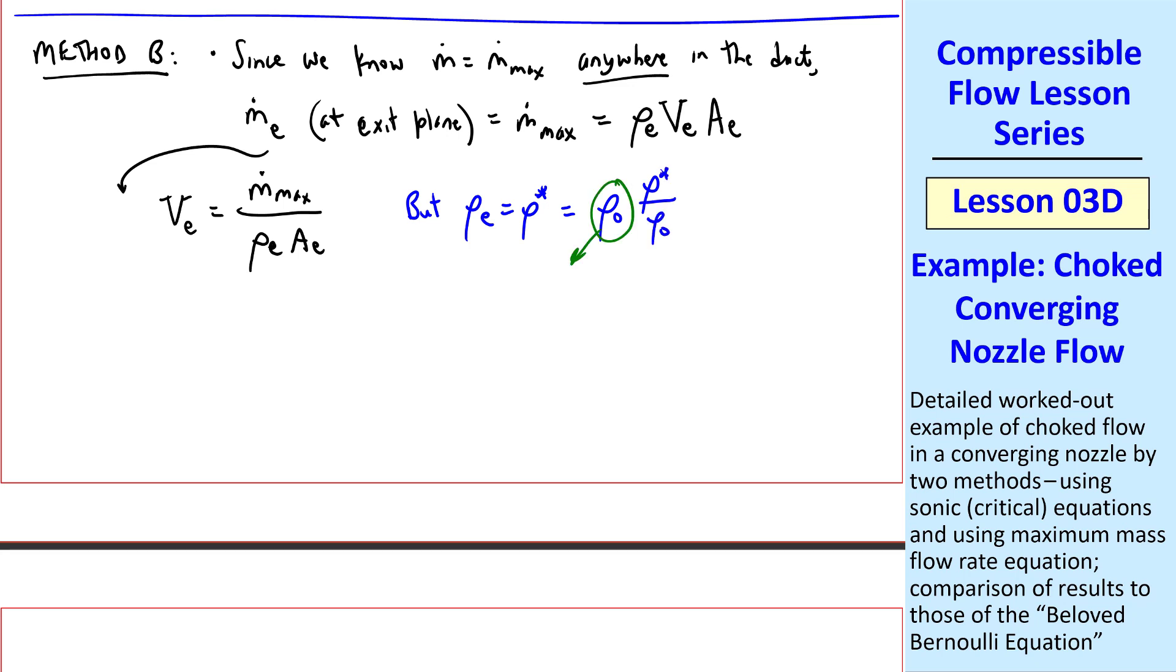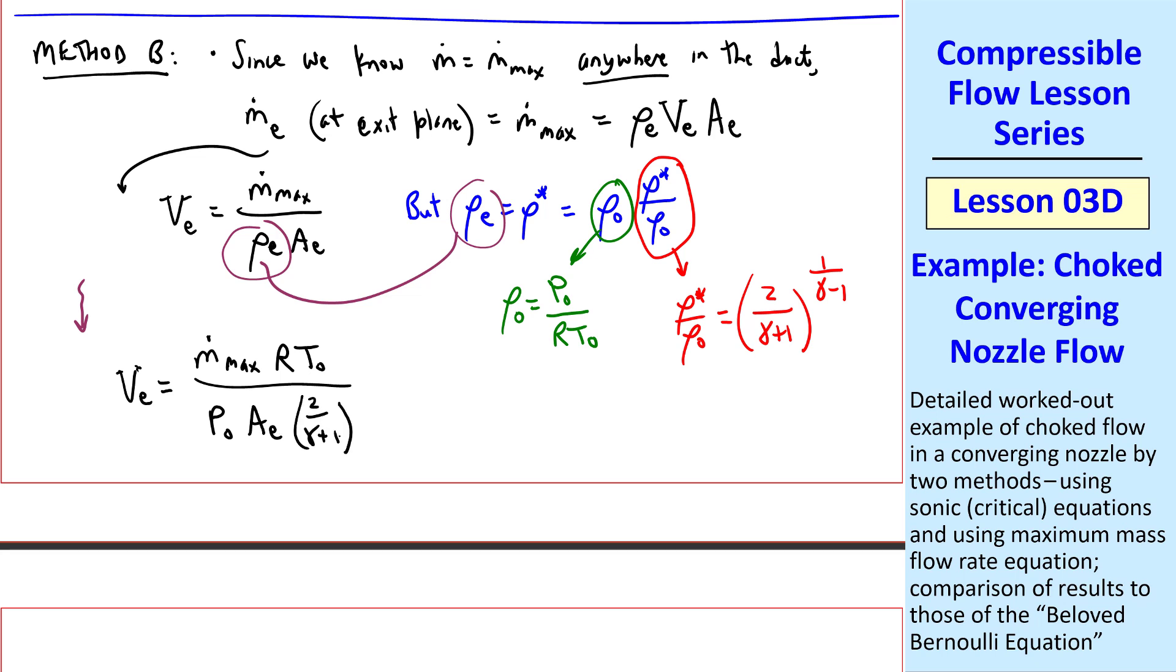Again I'll use ratios. This is equal to rho naught times rho star over rho naught. Well from the ideal gas law, rho naught is P0 over RT0. And from our critical relationships for an ideal gas, rho star over rho naught is 2 over gamma plus 1 to the exponent 1 over gamma minus 1. So plugging these into here, and this into here, after a little bit of algebra, we get VE equal m dot max, RT0 over P0, Ae, 2 over gamma plus 1 to the 1 over gamma minus 1. This is our answer in variables.